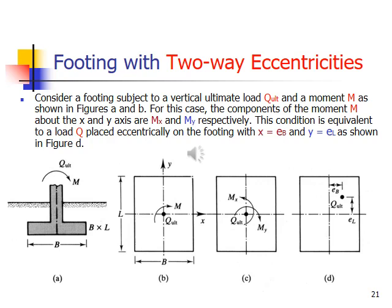Footing with two-way eccentricities. This is also of the same order. B dashed or L dashed are calculated accordingly, and those things are implemented or put in the bearing capacity equation to calculate the bearing capacity.